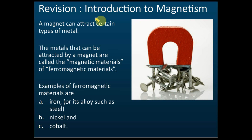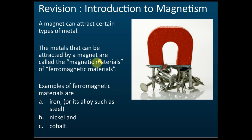I want to do some revisions about magnetism. You should have learned magnets in standard 4 and also form 3. A magnet can attract certain types of metal, and the metals that can be attracted by magnets are called magnetic materials. If the metals can be strongly attracted by magnets, then they are called ferromagnetic materials. That's the difference between magnetic materials and ferromagnetic materials.